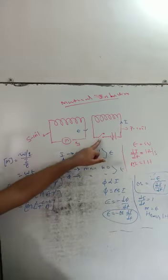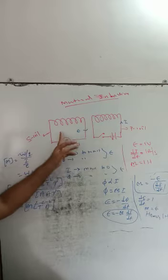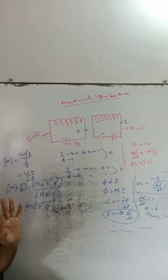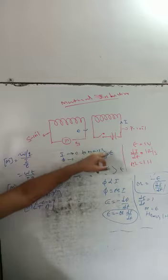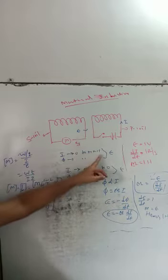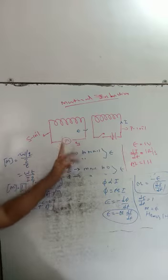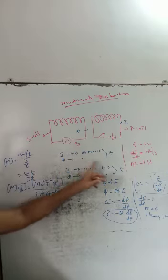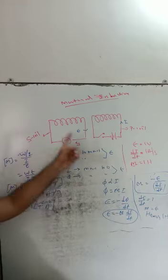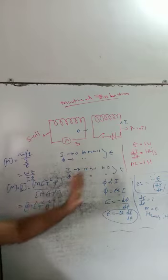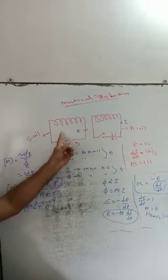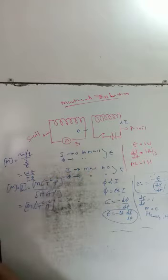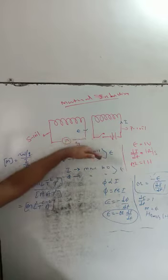When the primary coil key is pressed, the secondary coil shows a galvanometer deflection. As the primary coil key is pressed, current increases from zero to maximum, and in the secondary coil the magnetic flux increases. This secondary coil EMF is induced — so when current increases in the primary coil, EMF is induced in the secondary coil.